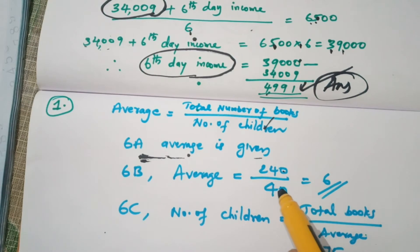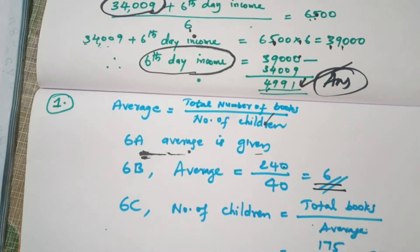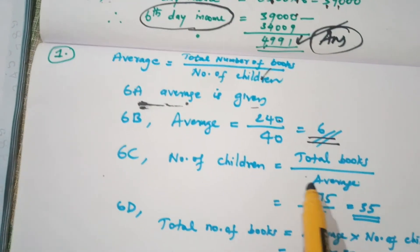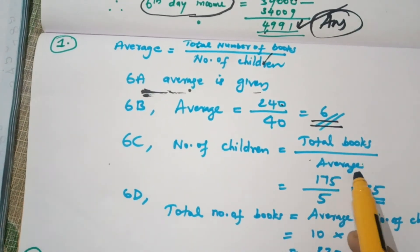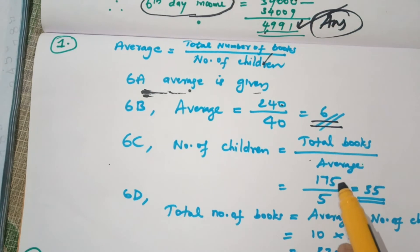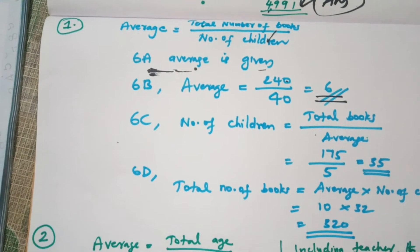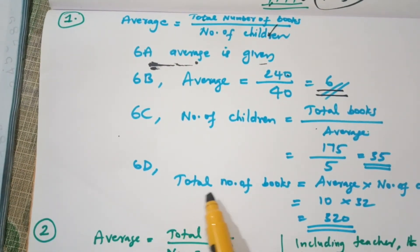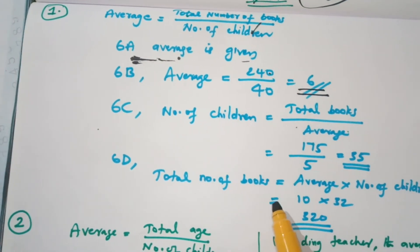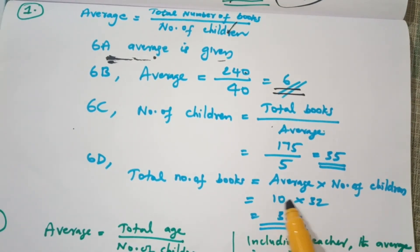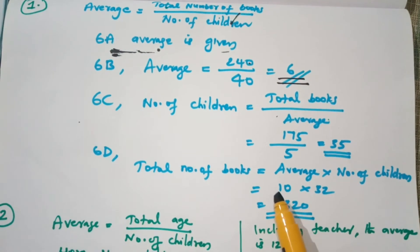We divide the number of children. The total number of books are multiplied by the average number of children. The average number of children is 10, the number of children is 32, and the total number of books is 320.